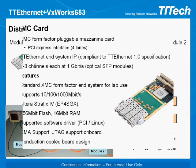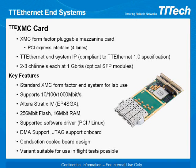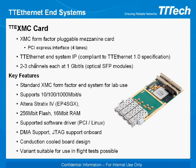The TT Ethernet PMC/XMC card with dual 1 Gigabit channels is plugged into the PMC slot of the Wind River embedded computer. TT Ethernet IP is installed on the Altera Stratix 4 FPGA and offers considerable adaptability for different applications. This card can be used with any CPCI, PCI Express, VME, or VPX port with a PMC or XMC mezzanine slot.